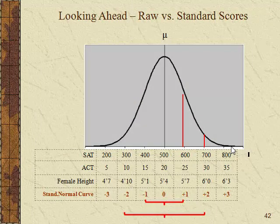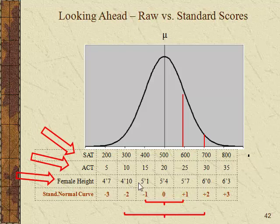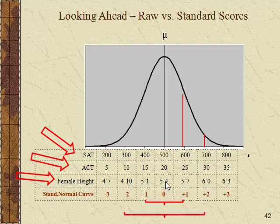Looking ahead, you can have raw scores and standard scores. Raw scores — such as SAT, ACT, and female height — are expressed in the specific metric you're measuring: inches, ACT points, SAT points. You can see what those scores look like and how they relate to the normal curve.